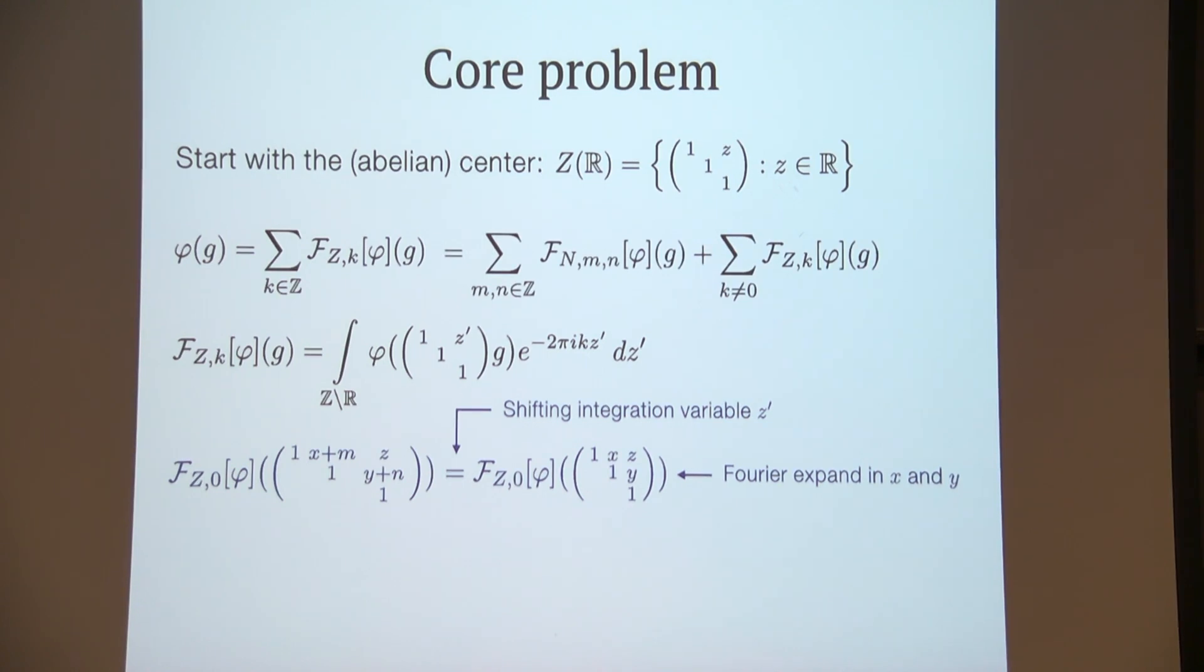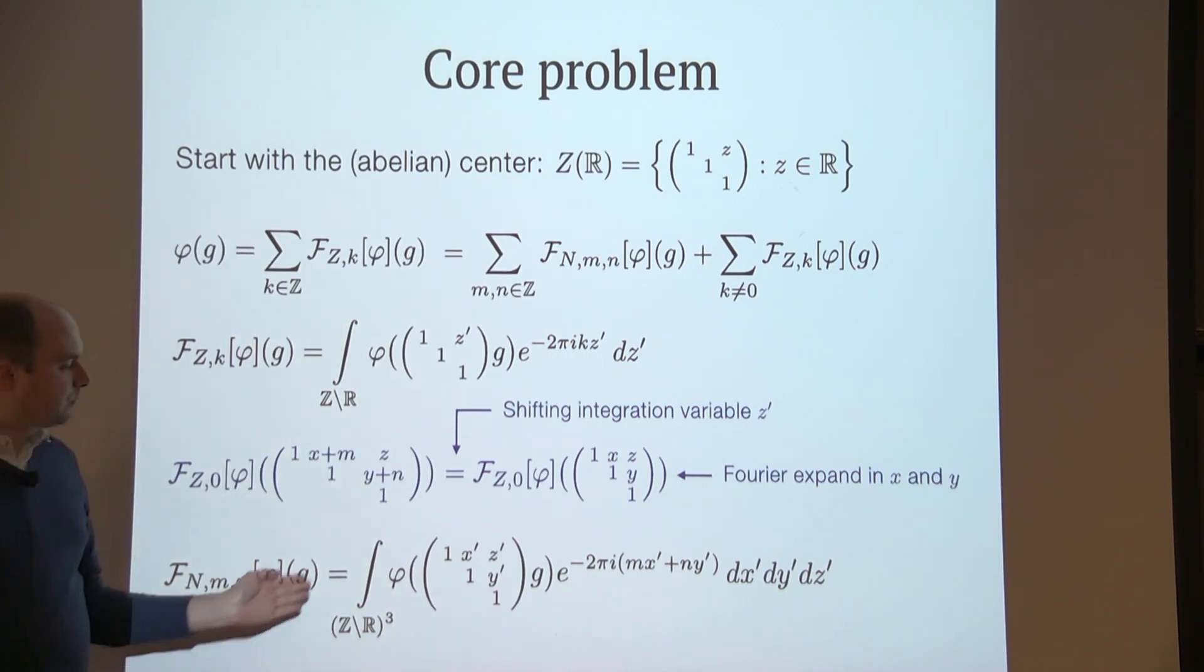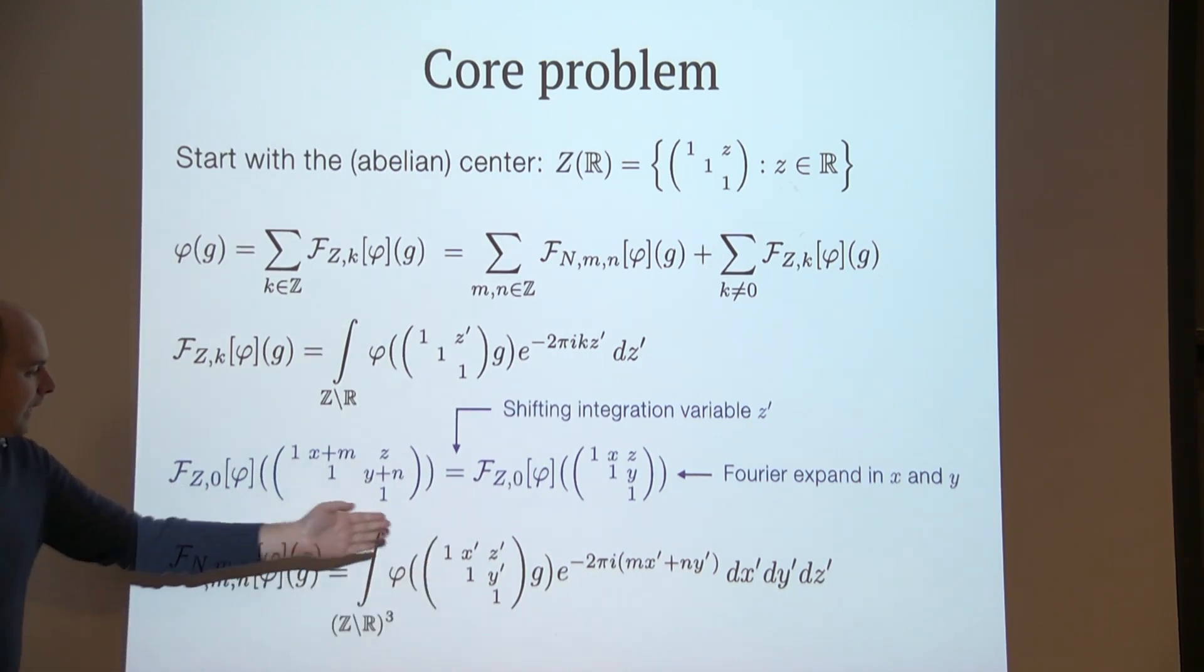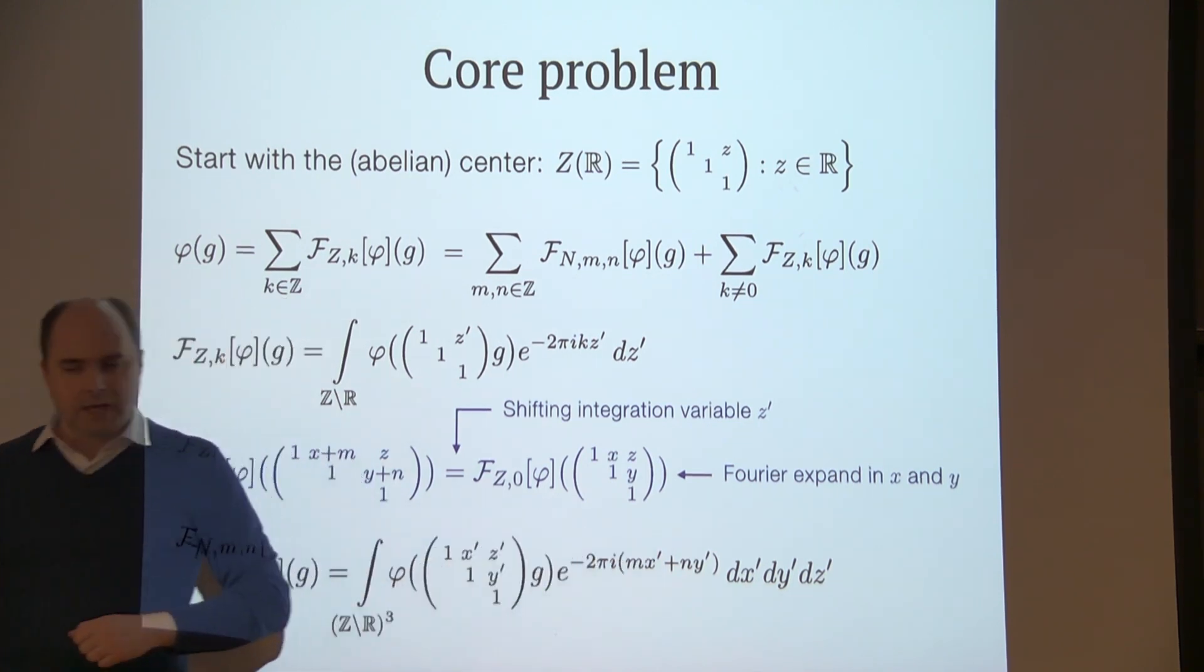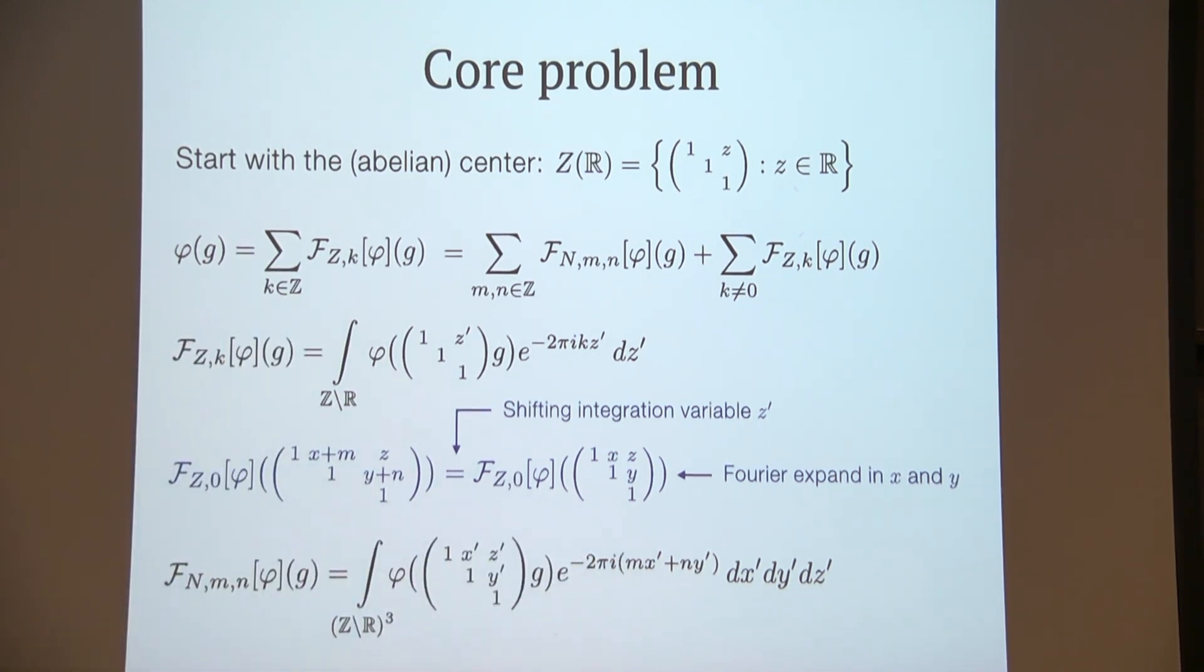The new Fourier coefficients here look like this, where we integrate over the whole of N, all the upper triangular matrices, but the Fourier modes only depend on x and y. So this is a full expansion of the function phi.